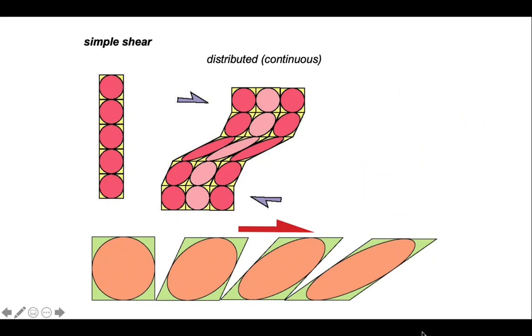How do they develop? Well, the cartoons below show how increments of simple shear strain imposed upon an initial circular marker increases its ellipticity.